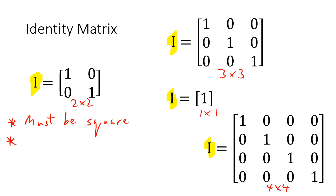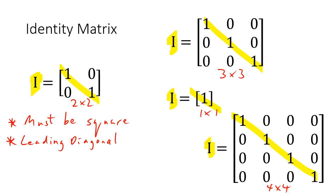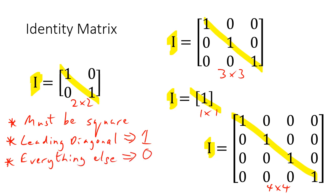The identity matrix is just like the number 1. The leading diagonal has to be 1s, and then everything else is zeros. We can see that on these examples — everything else is 0. Those are the main things to note about it.